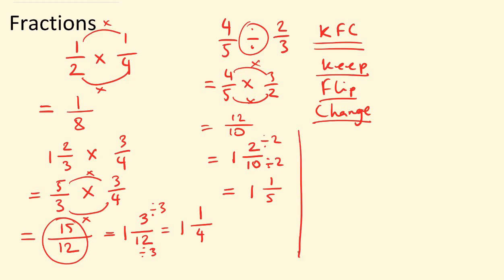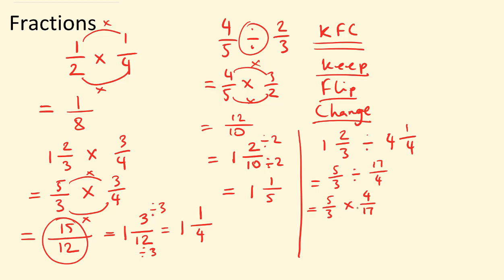One last example where we can actually divide mixed numbers. So let's say one and two thirds divided by four and a quarter. Let's change into improper fractions first: three times one is three, add two is five over three. Dividing it by four times four is 16, add one is 17 over four. So according to the KFC dividing fractions rule — keep five over three, flip the second fraction, and change the sign. So let's do three times 17 is 51, and five times four is 20. So the answer is 20 over 51.